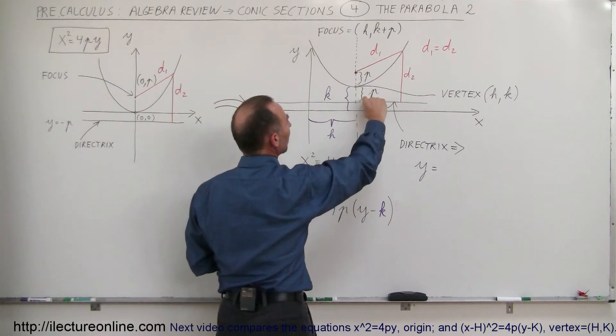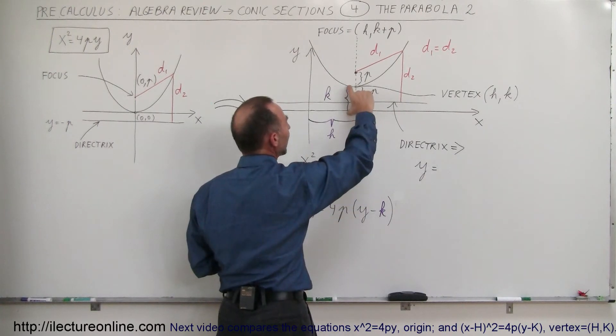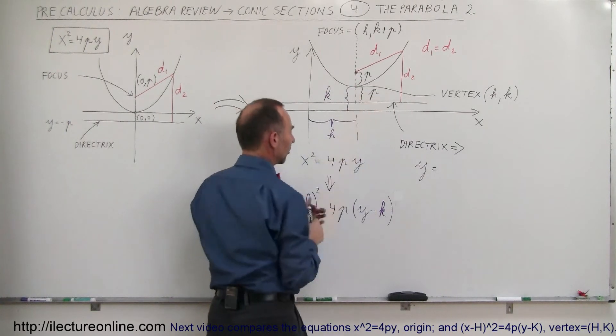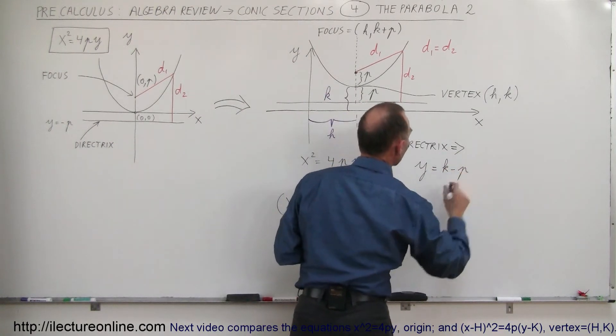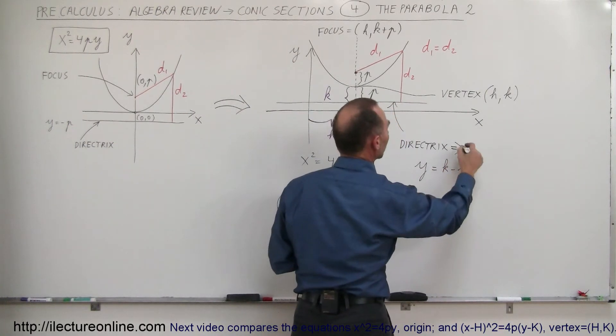Alright, so anyway, it is this distance above the x-axis. So that would be equal to k minus p, that will give you this distance right here. So y is equal to k minus p and that would be the equation for the directrix.